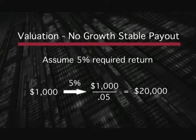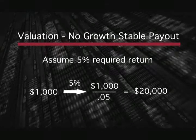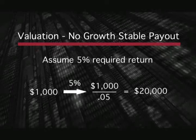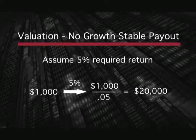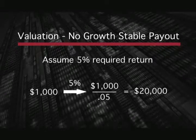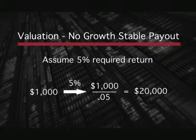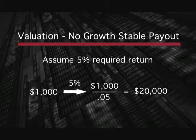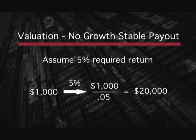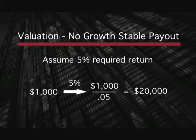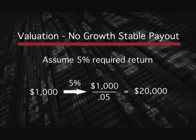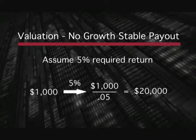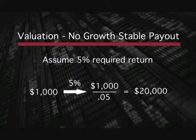Looking at slide number one, we're going to assume a company that has no growth but a stable payout. Think about that as a coin-operated laundry that just makes a fixed amount. Let's assume it makes $1,000 a year and you want to make 5% on your investment. So how much is that investment worth? It's $1,000 divided by 5%, or $20,000. That's the value of your investment.